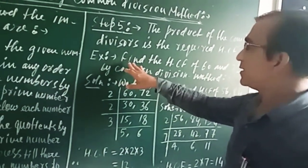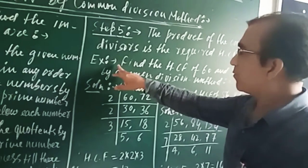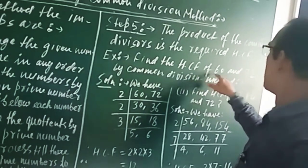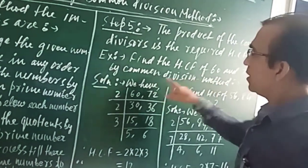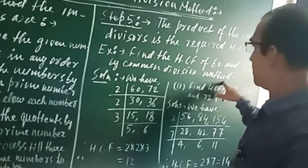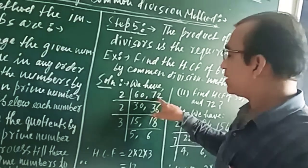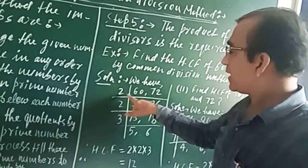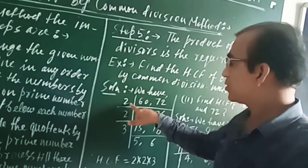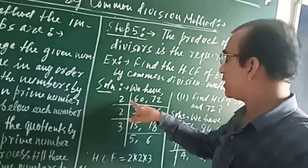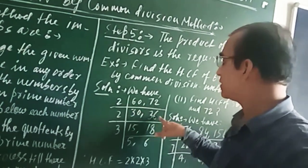Let us take some examples to explain this process. Example number 1: Find the HCF of 60 and 72 by common division method. Solution: We have 60 and 72. The smallest common factor is 2. So divide 60 and 72 by 2, we will get 30 and 36.